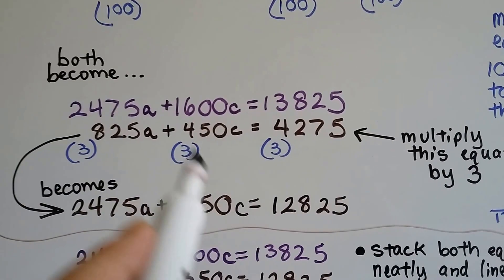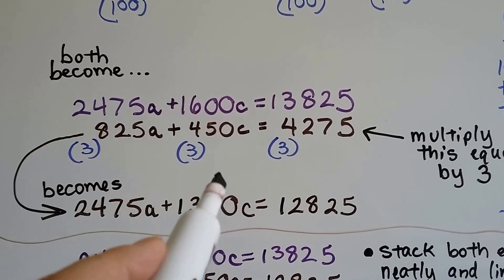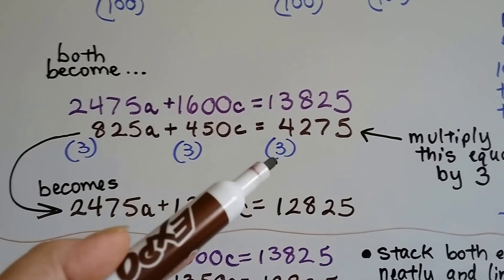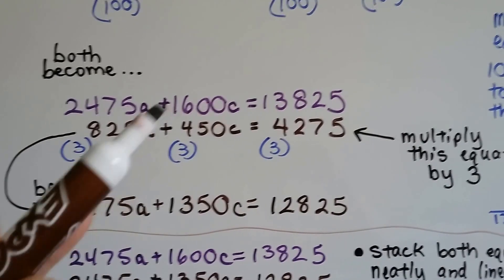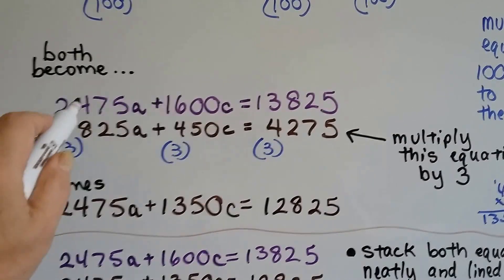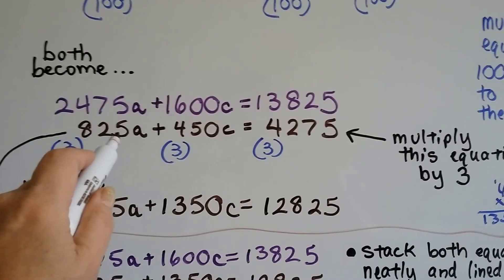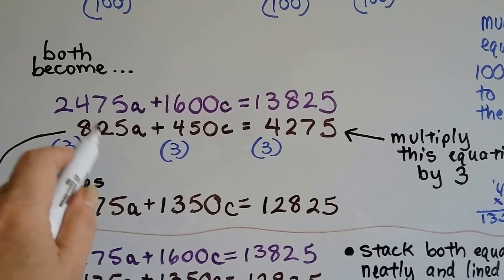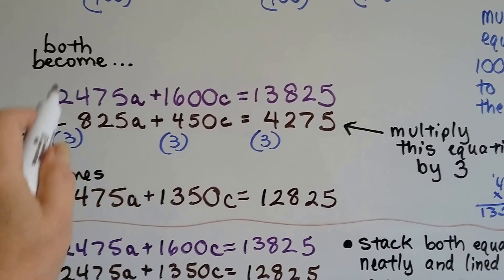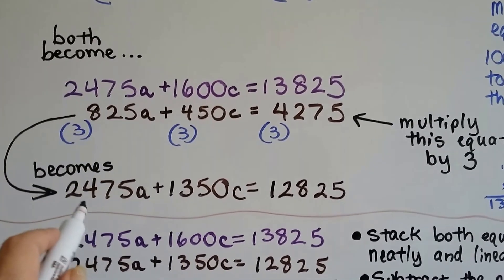Now we need to multiply one of the equations so that we can get a zero pair and eliminate one of the variables. The first thing I see is, I know 8 times 3 is 24, and I know 25 times 3 is 75. So if I multiply 825 by 3, that's going to be 2475.